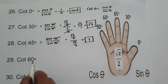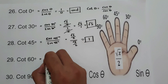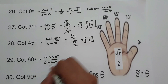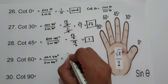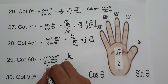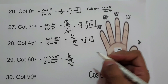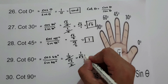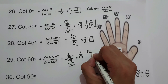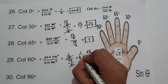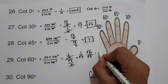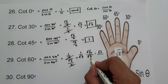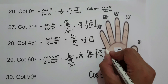For cotangent 60°, that is cosine 60° over sine 60°. Cosine 60° is 1/2 and sine 60° is square root of 3 over 2. Canceling the 2s gives 1 over square root of 3. Rationalizing by multiplying numerator and denominator by square root of 3 gives square root of 3 over square root of 9, and square root of 9 is 3. Cotangent 60° is square root of 3 over 3.